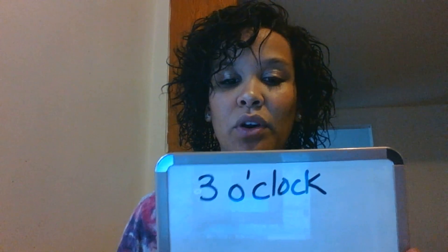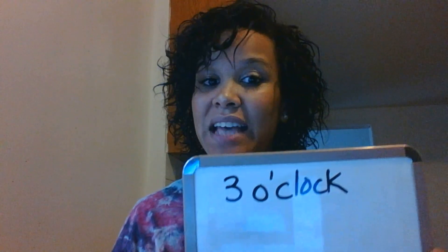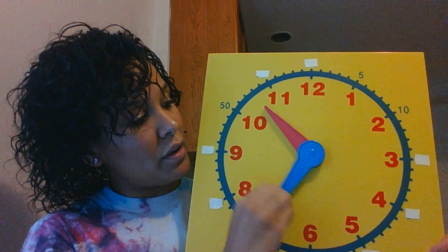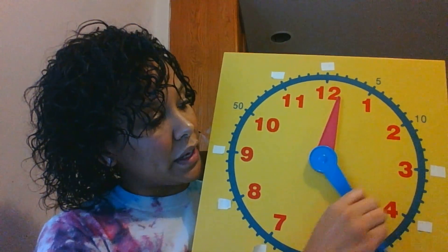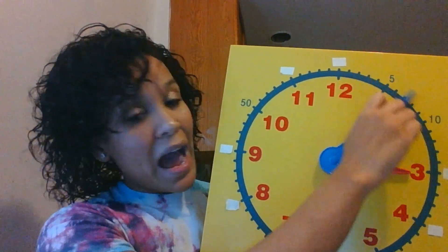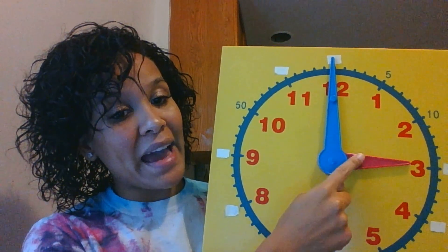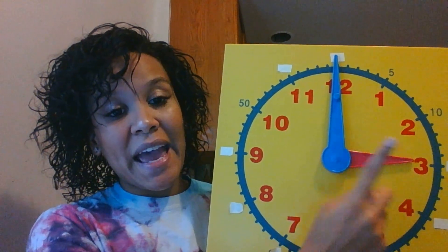Today we are going to review how to tell time by the hour. I wrote down on my whiteboard three o'clock — that is how it will look when we write it down. Now I'm going to show you three o'clock on my clock. I'm going to turn my big hand — remember, it goes counterclockwise, it never goes backwards — and stop my hour hand, the shorthand, touching the three. And let's not forget his name: Mr. O'Clock. Anytime our big hand is touching the 12, we say o'clock. This shows three o'clock.